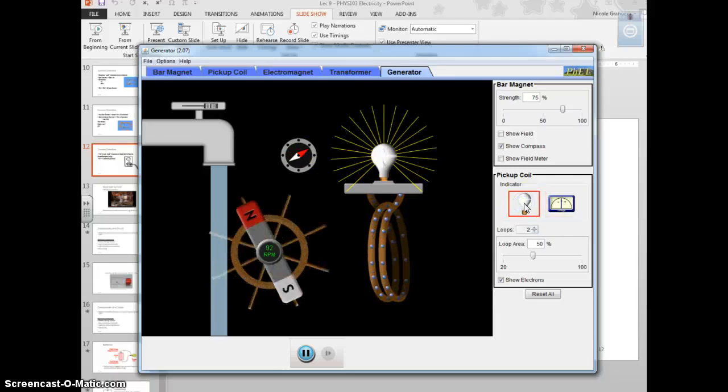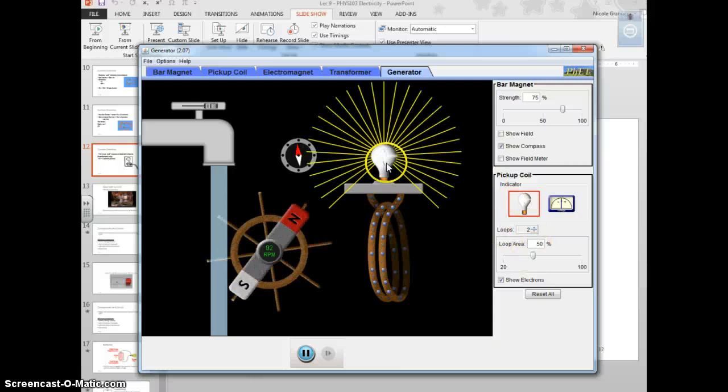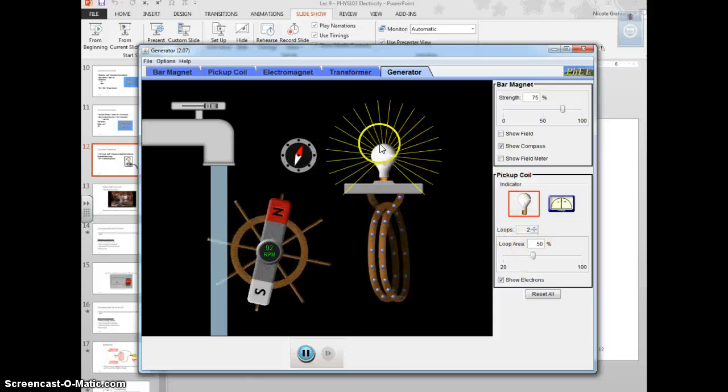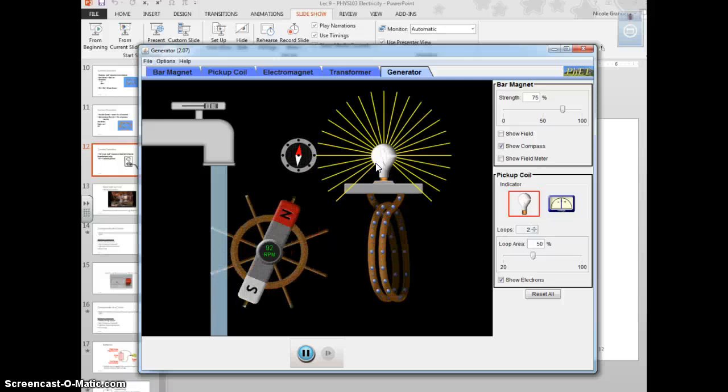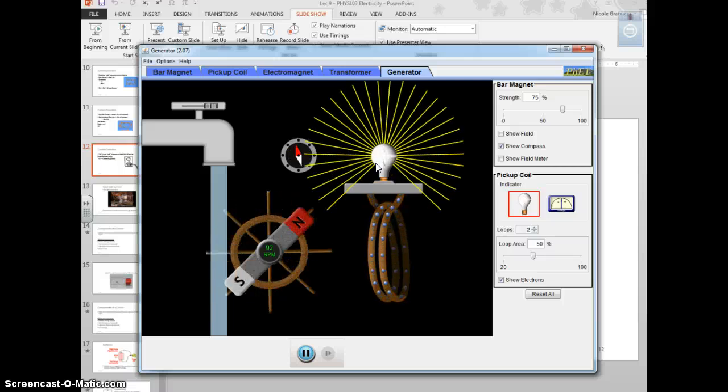You can see it right here. And like I said, the light bulb blinks so fast that we don't even notice it. But it does actually do this. Again, our human eyes won't detect it. So, it's pretty awesome.